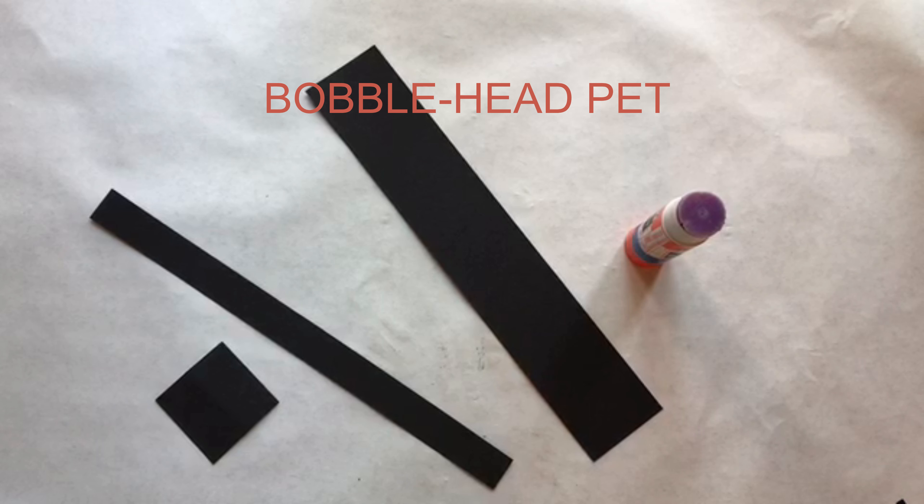Project number two, let's make a bobblehead pet. I have two cats so my bobblehead pet will be a cat. I have a strip of paper that is two inches wide and eleven inches long for the body, another skinnier strip I will use to cut the tail, and a two inch square for the head. You will also need a small strip for the hinge.